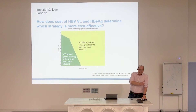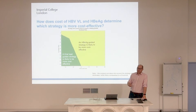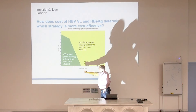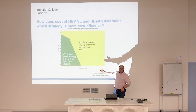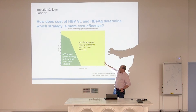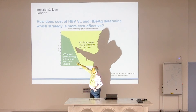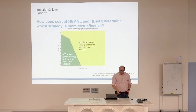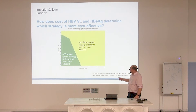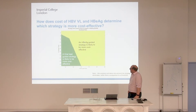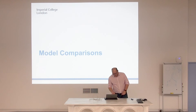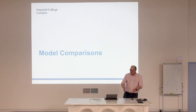Our conclusion ended up being that: well, should we do peripartum treatment guided by e-antigen or viral load? The answer was: it depends more than anything on the costs at which you can procure and deliver that screening — whether by viral load or e-antigen. If viral load costs are high, which they're likely to be in most settings, then the HBeAg strategy is likely to dominate. If e-antigen costs are high, then the viral load strategy dominates. So we did a lot of work for the WHO and essentially concluded: the cheaper screening method is likely to be the most cost-effective — which somewhat makes intuitive sense.